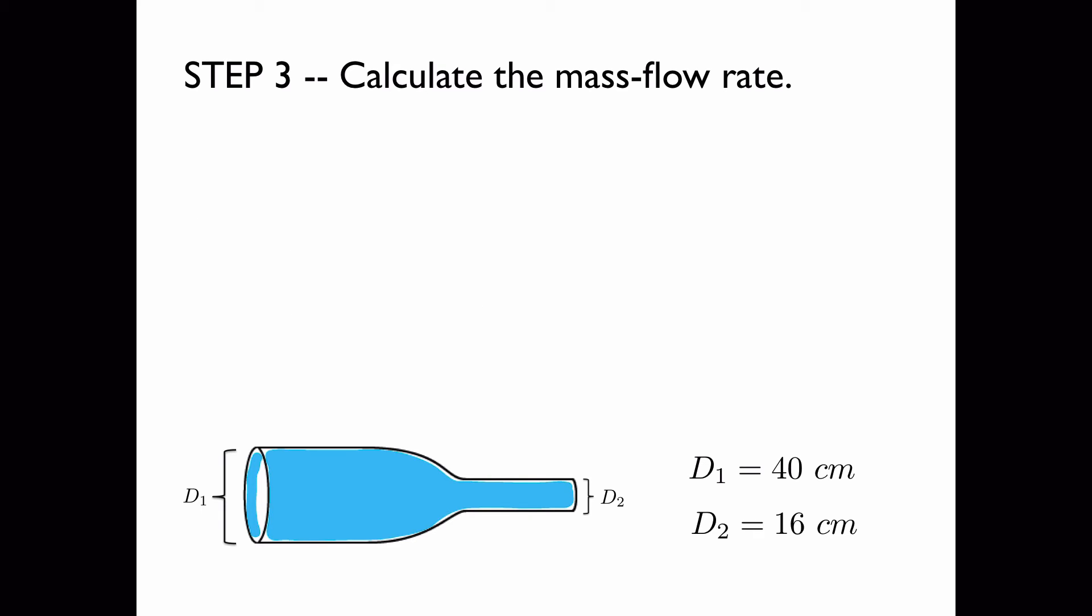Now we'll calculate the mass flow rate. The equation for the mass flow rate is the density times the area times the velocity. Because we're dealing with water, we have a density of 1,000 kilograms per meter cubed.